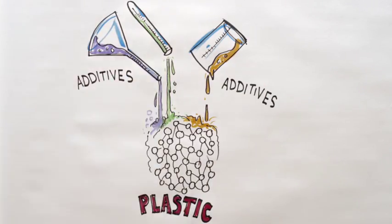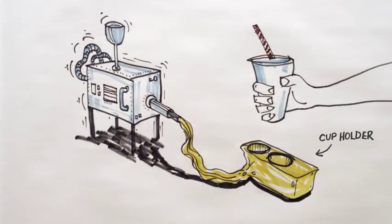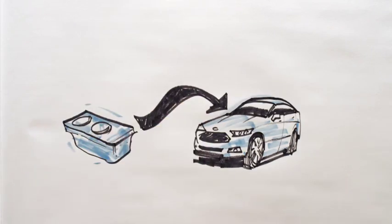We compound it with other additives. We injection mold it into the shape of the part that we want. So waste materials are becoming durable performance materials.